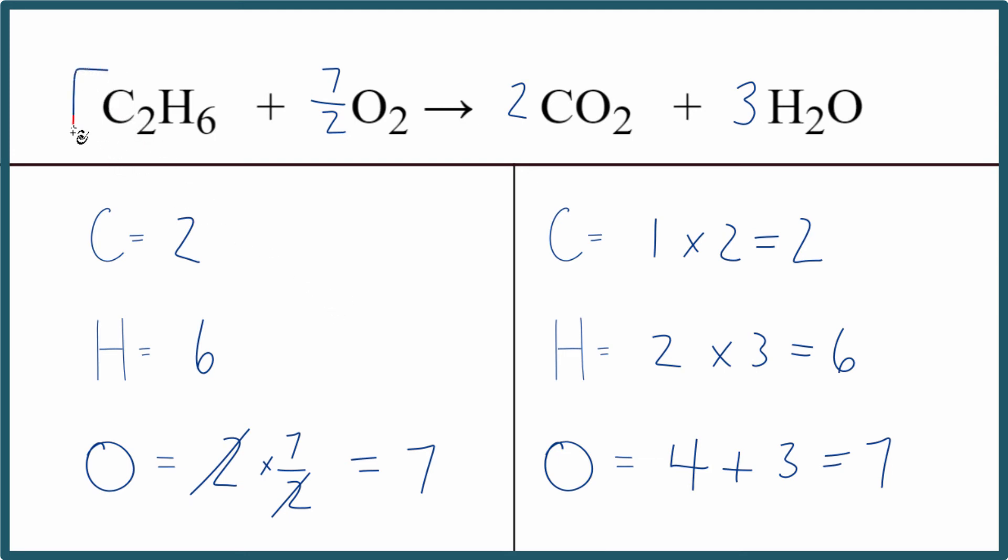We can double everything here, all of the coefficients, multiply by two, and that'll get rid of the fraction. So we have two times the one here, that's two for a coefficient. Two times seven over two, that equals seven.